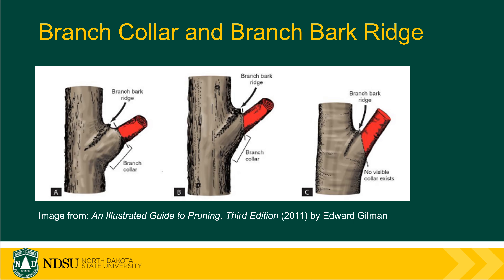Some species are better than others at compartmentalization, and it will be critical in understanding where we make our pruning cuts. In this illustration you can see where a branch attaches to the trunk — there is a branch collar, an area that swells out. These tissues help bear the weight of that heavy branch, but they also have those defensive chemicals. When we make a cut we want to make sure to retain the branch collar. You can also see the branch bark ridge on some species, which helps identify where the branch collar might be.